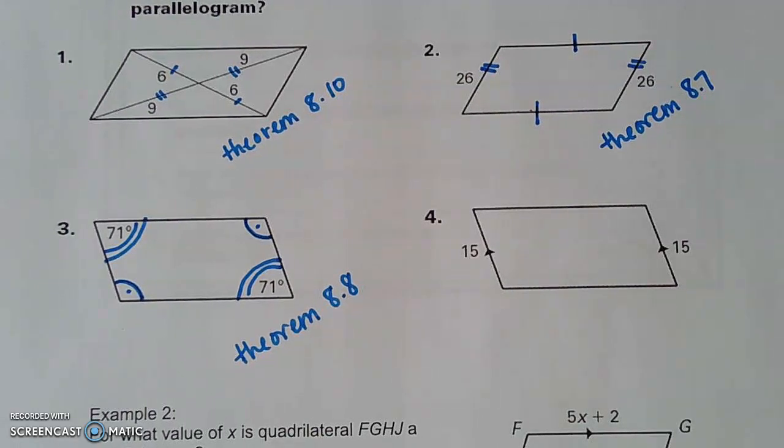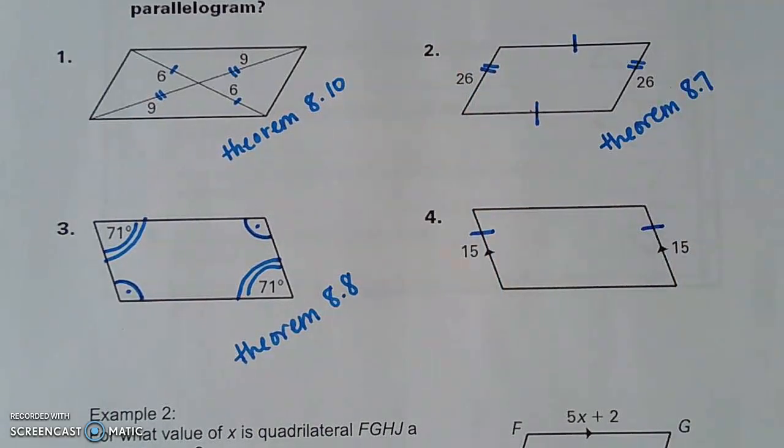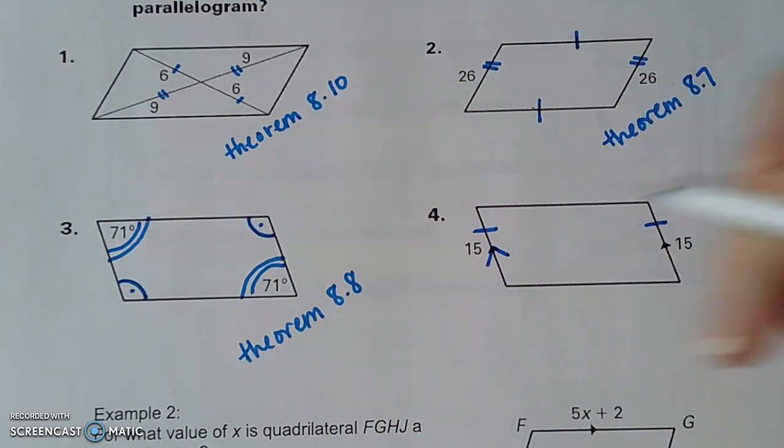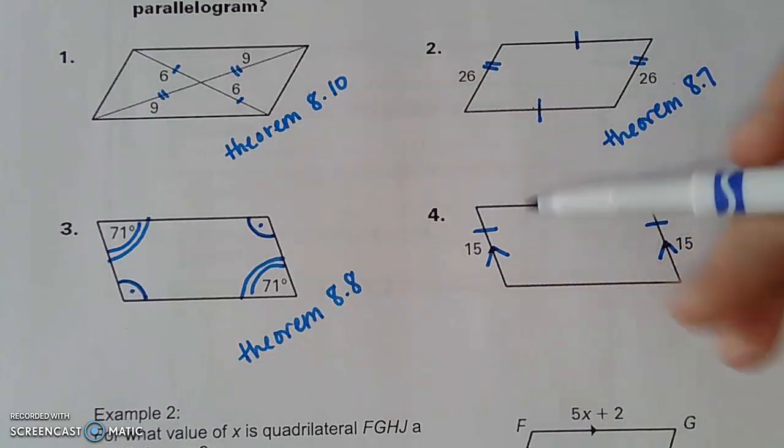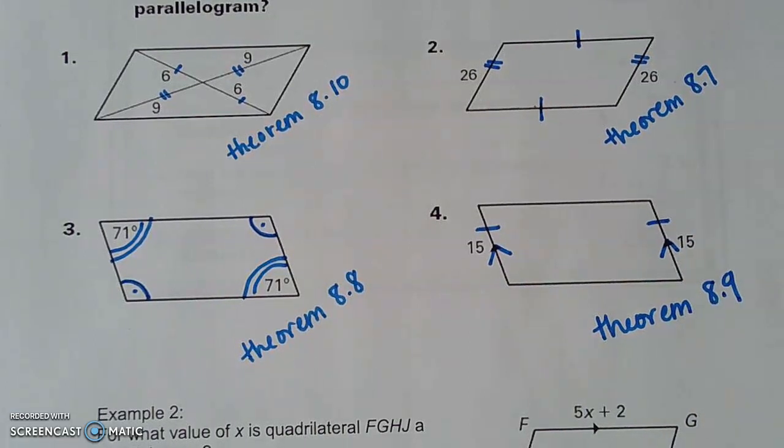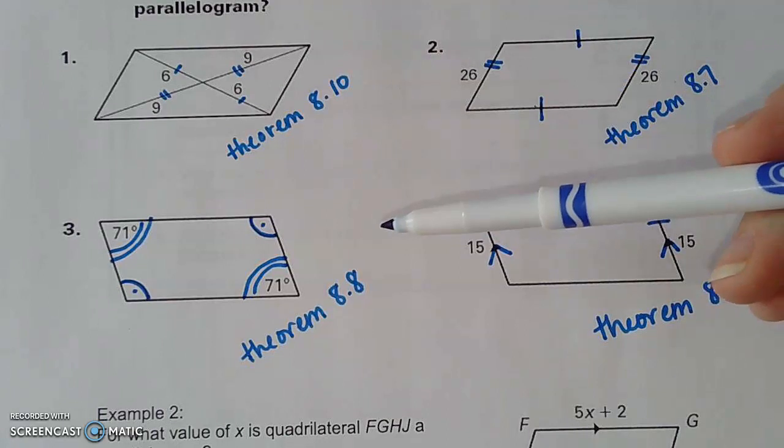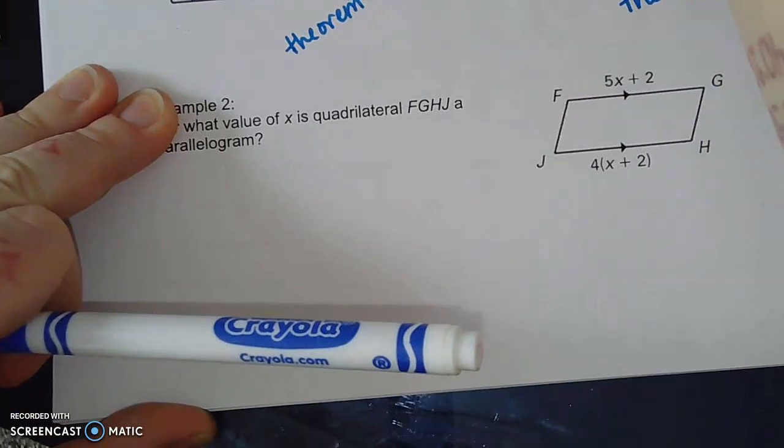And then finally, I see 15 and 15 for question 4. So these sides are congruent. And I also see the little arrows here. So at least one pair of my sides are both congruent and parallel. So this is theorem 8.9. So this question does a really nice job of giving you a visual of all four of those theorems. And so here's some of the theorems that make parallelograms or make a quadrilateral a parallelogram.